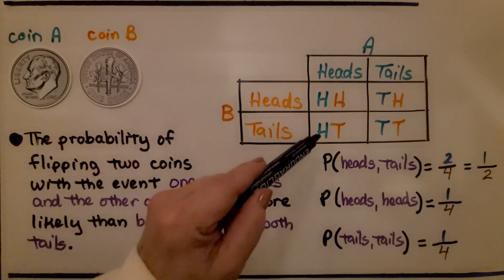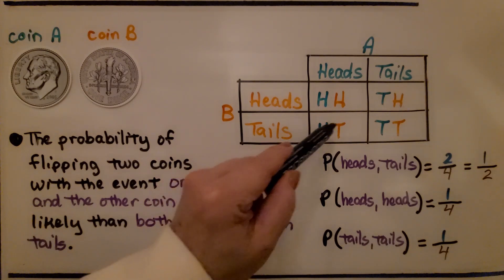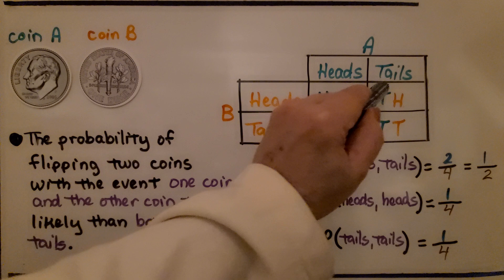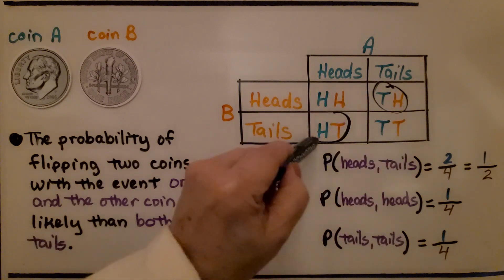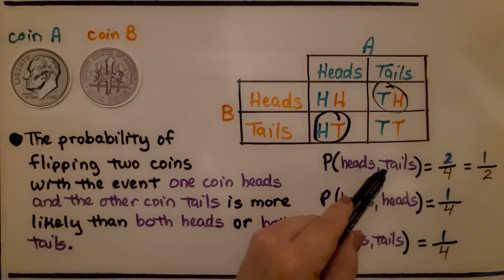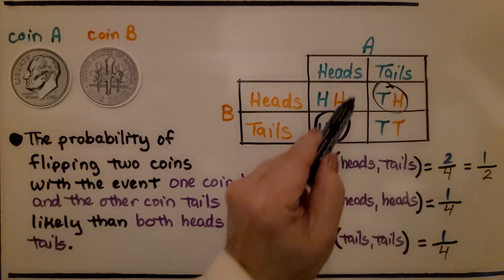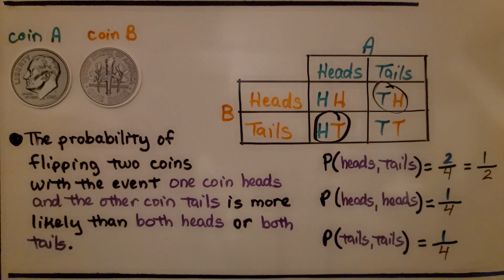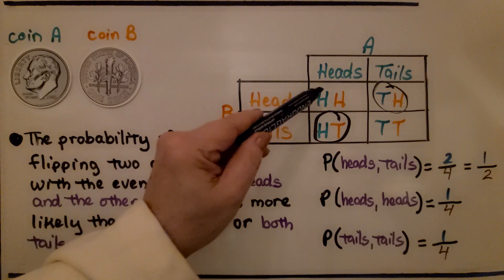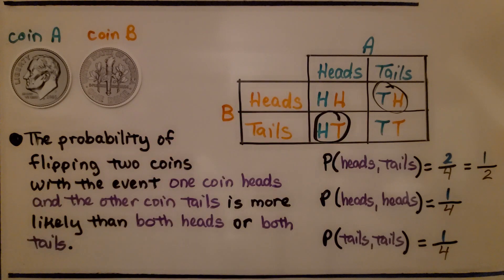Or we could get a heads for A and a tails for B or they can both be tails. We can see that the combination of heads and tails is more likely as 2 fourths of the cells or 1 half. To get head-heads would be 1 fourth or tails-tails would be 1 fourth.